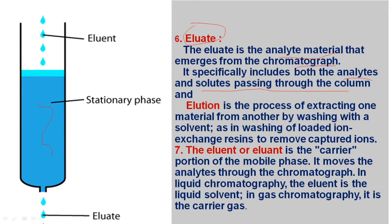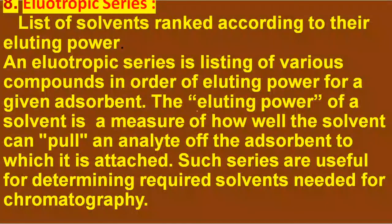The eluent is the carrier portion of the mobile phase that moves the analytes through the chromatograph. In liquid chromatography the eluent is a liquid solvent, and in gas chromatography the eluent is the carrier gas. The eluate consists of the desired material as well as solid particles that pass through the column.